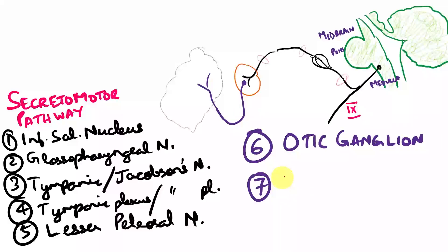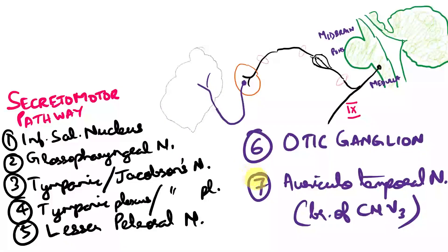From the otic ganglion you have the auriculotemporal nerve. Please remember that the auriculotemporal nerve is a branch of cranial nerve V3, the mandibular nerve. There is something very interesting here — the glossopharyngeal nerve is the main nerve carrying the secretomotor pathway, giving off a branch, forming a plexus, and forming the lesser petrosal nerve. That entire glossopharyngeal pathway synapses in the otic ganglion, which is a parasympathetic ganglion, because salivation is a parasympathetic function. All cranial parasympathetic ganglia are located topographically close to trigeminal nerve branches — the otic ganglion is related to the mandibular nerve, and from there the auriculotemporal nerve innervates the parotid gland.